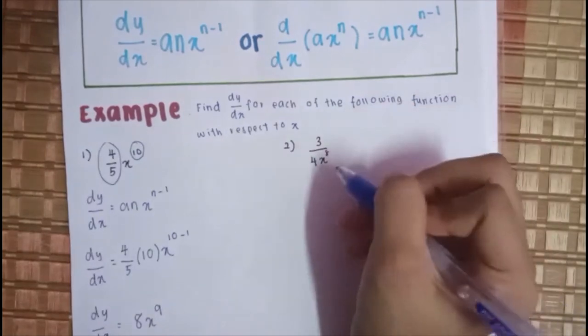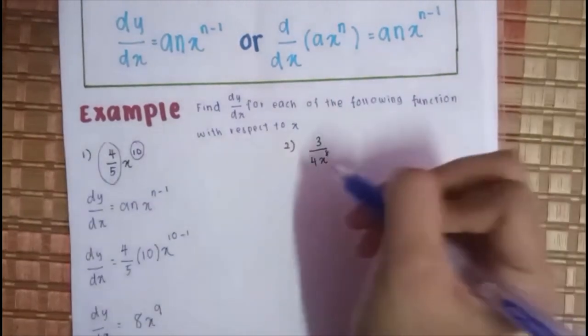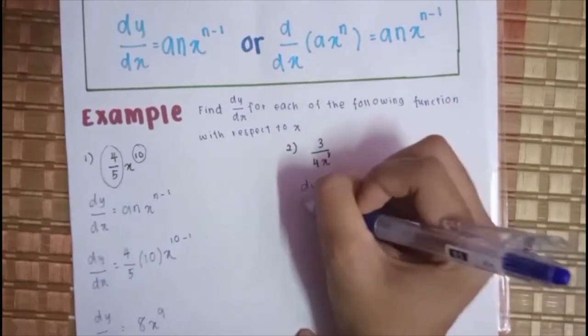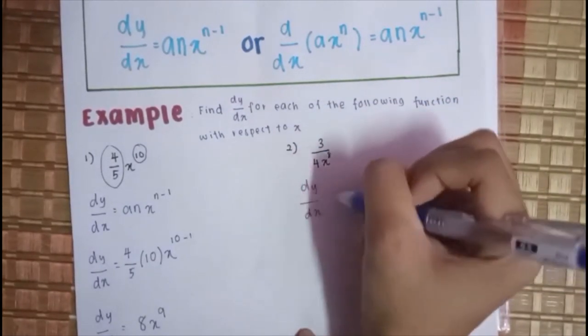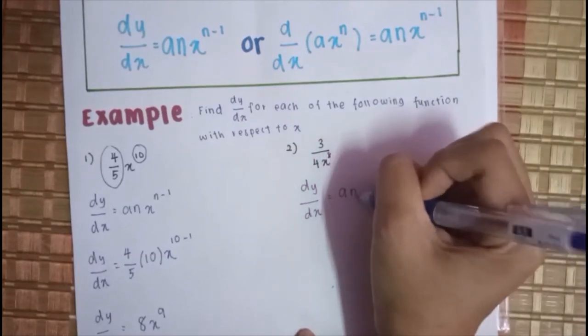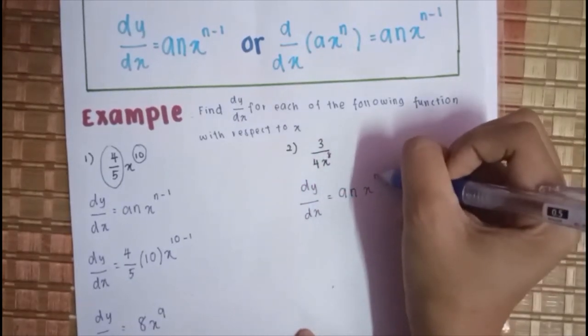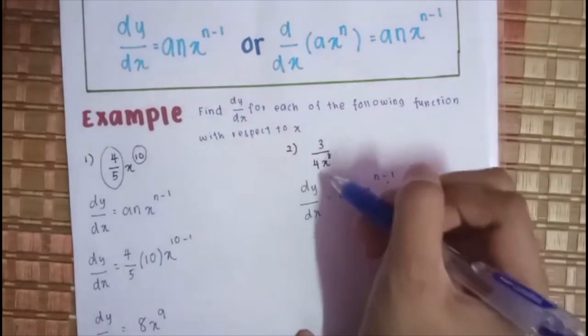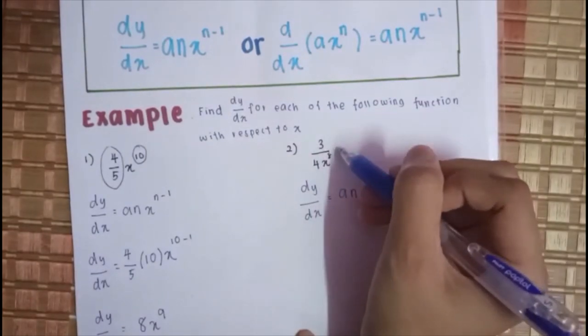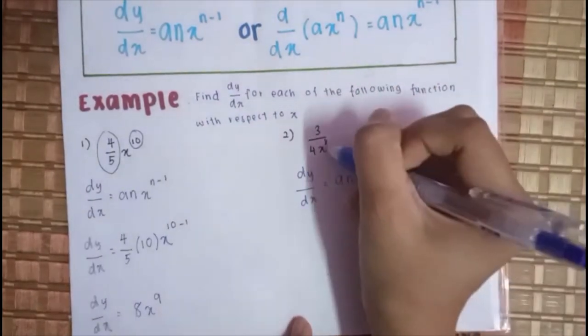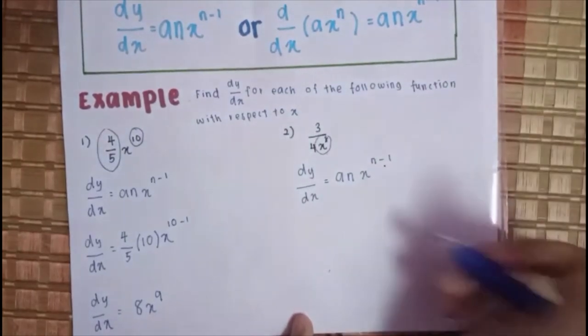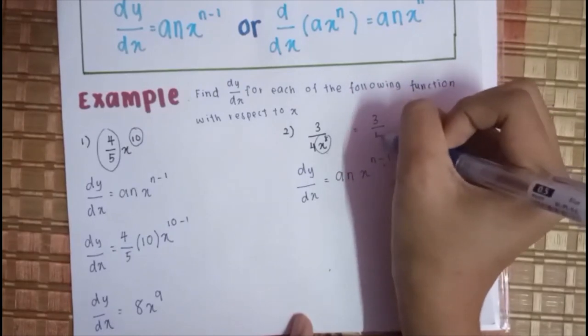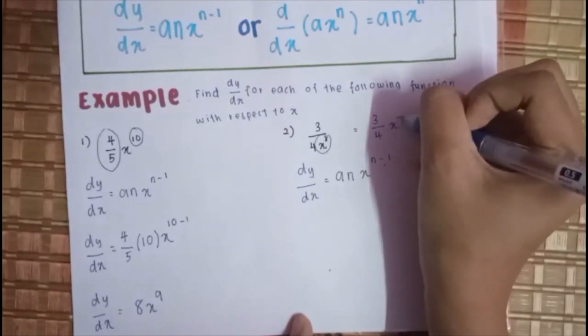Bagi yang kedua pula, kita ada bahagi. Macam mana pula? X ada dekat bawah. Jadi kita tulis balik formula dia macam mana? DY per DX sama dengan ANX N tolak 1. Tapi macam mana nak masukkan kalau X dekat bawah? Kita kena tukar dulu. X ni jadi balik dekat atas. Macam mana nak buat? Kita bawa je X ni naik atas. Dia akan jadi macam 3 per 4 X negatif 8.